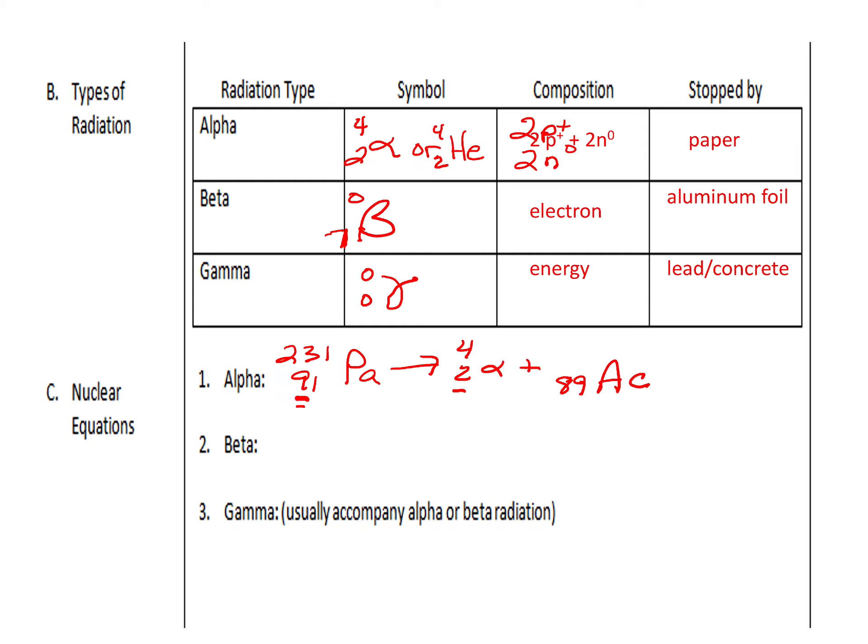And what's the mass number for it? So, if you're good at math, you should say that would be 231 minus 4. So, that would be 227. So, we could actually determine what element palladium would transmutate into if it released an alpha particle, which is really kind of cool.